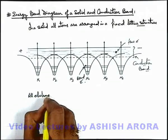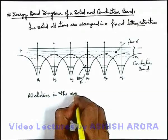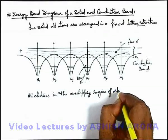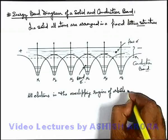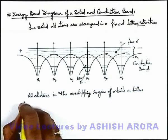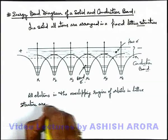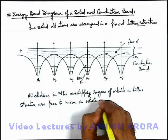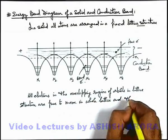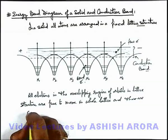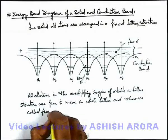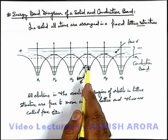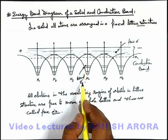To summarize: all electrons in the overlapping region of orbitals in the lattice structure are free to move in the whole lattice, and these are called free electrons. Those which are below the region of overlapping orbitals are only under the influence of individual nuclei, and so these electrons are called bound electrons.